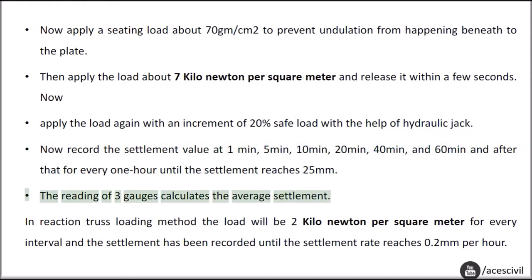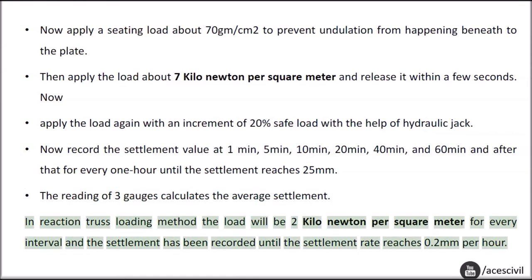The readings of the 3 gauges are averaged to calculate the settlement. In the reaction truss loading method, the load increment is 2 kN/m² for every interval, and settlement is recorded until the settlement rate reaches 0.2 mm per hour.